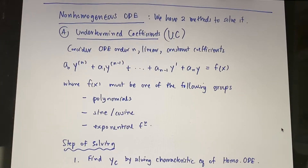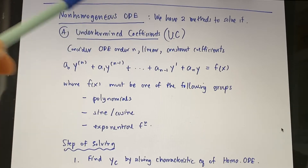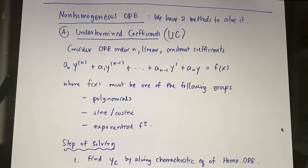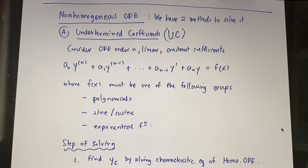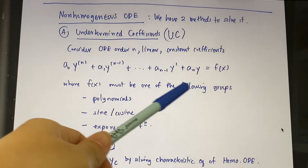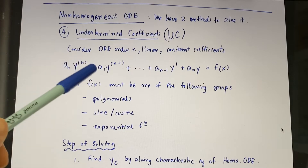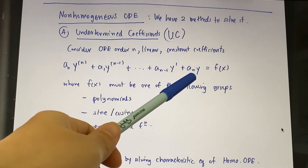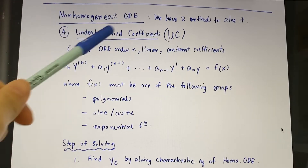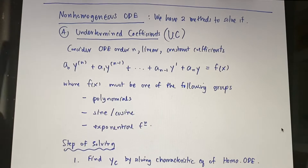The next topic is non-homogeneous ODEs. I'll give you two methods to solve them: the first is called undetermined coefficients and the second is called variation of parameters. This is the general form of the nth-order linear ODE with constant coefficients — a₀, a₁, through aₙ are constants. Non-homogeneous means f(x) is not equal to zero.